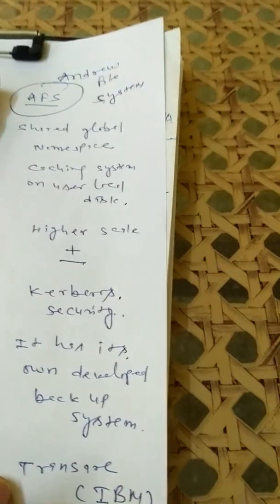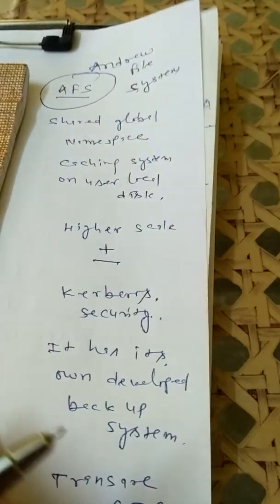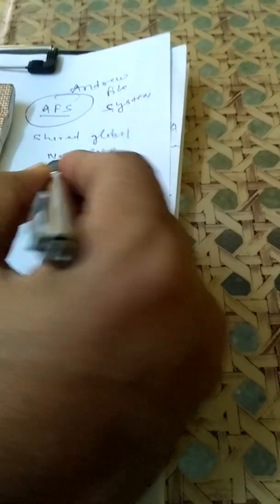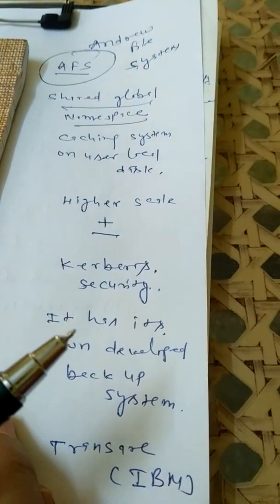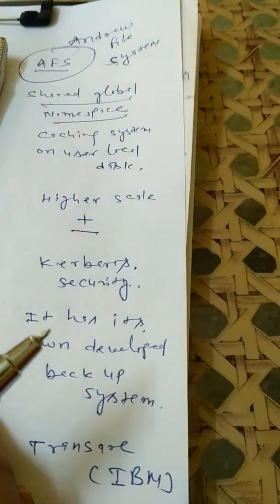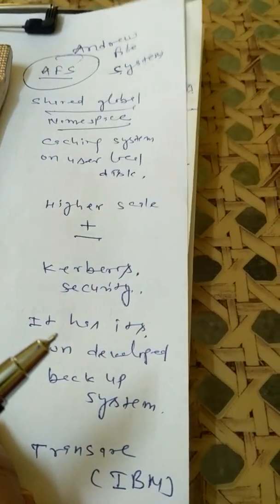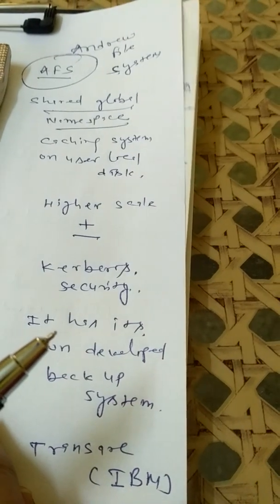Like in the Andrew file system, the shared global namespace is used. The shared global namespace is basically used in the Andrew file system.